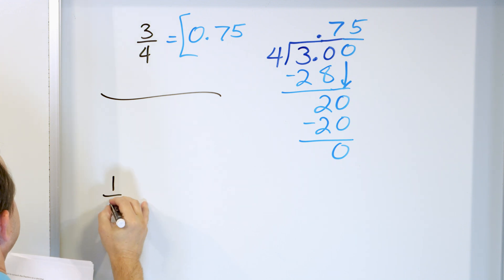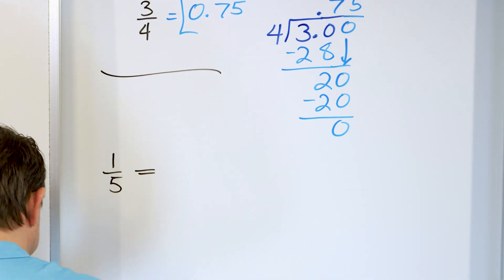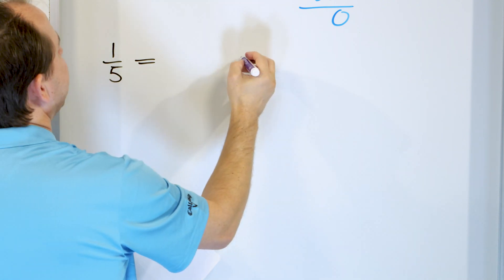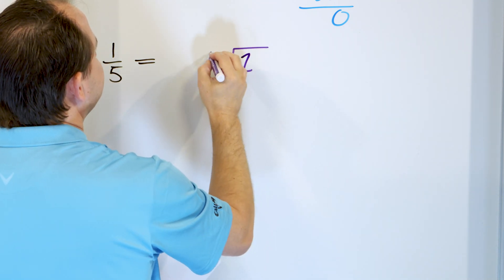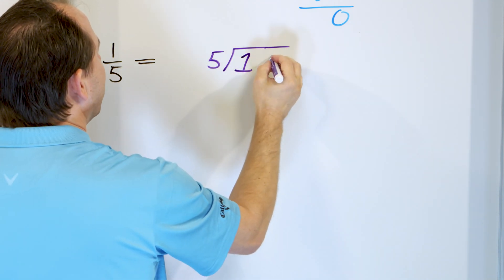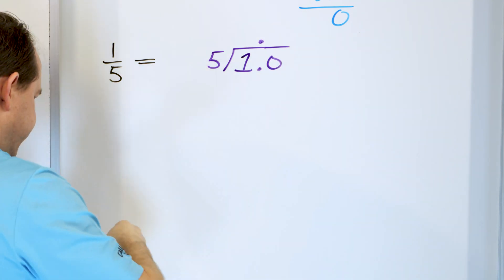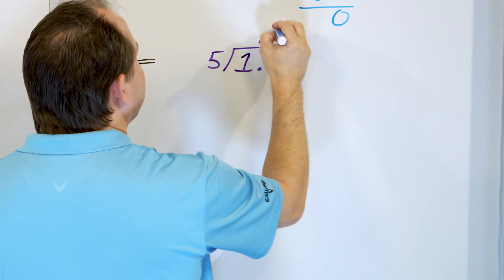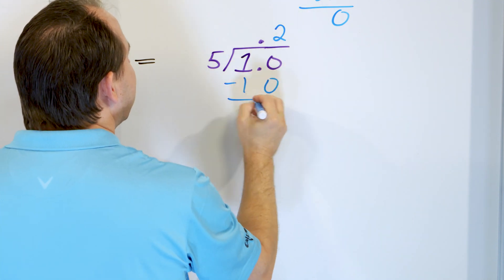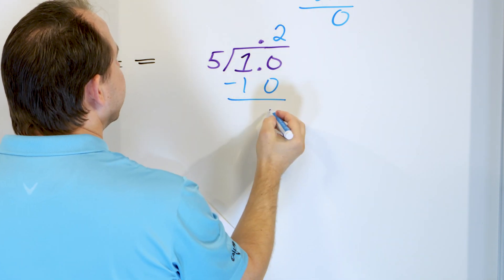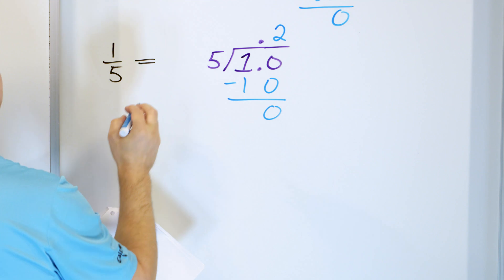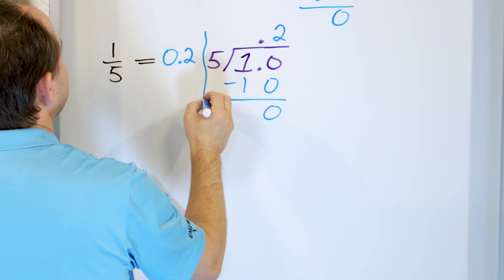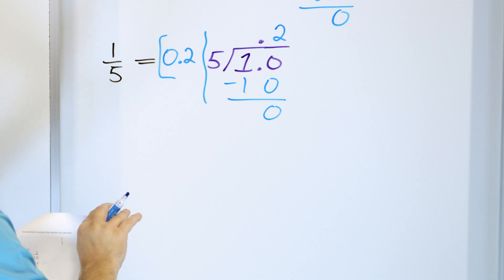What about one fifth? We take 1 and divide by 5, making it 1.0 with the decimal above. 5 times 2 is 10 — subtract, 10 minus 10 is 0. We immediately stop. So one fifth is 0.2.